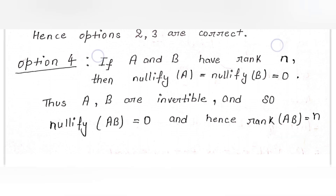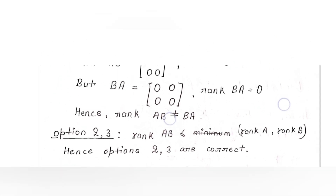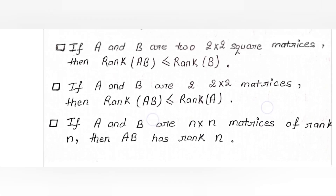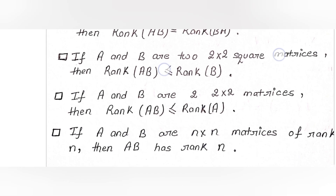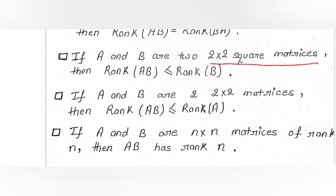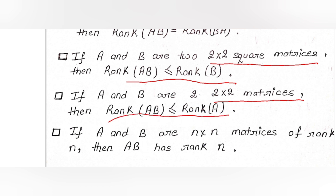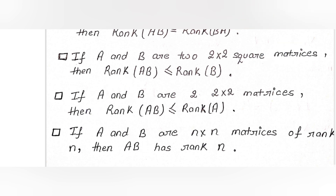Now let me show the question once again for clarity. Option 2 states rank(AB) ≤ rank(B) and Option 3 states rank(AB) ≤ rank(A) — both are similar with just a difference of rank(A) and rank(B), which is why we merged them. So the correct answers are Options 2, 3, and 4. That's all for this video, thank you.